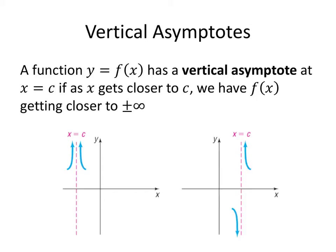Now, the asymptotes that we're going to be most interested in are vertical and horizontal asymptotes. An asymptote can really be any kind of line, but the verticals and the horizontals are the most interesting.